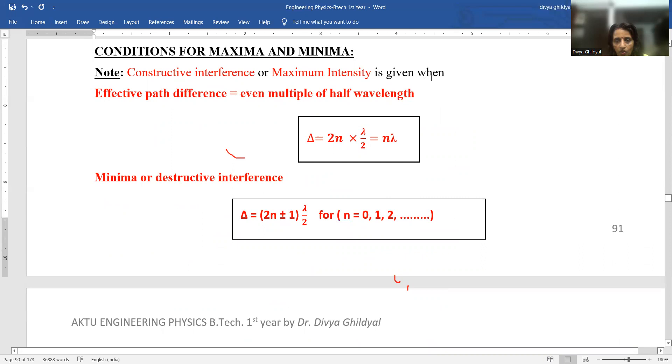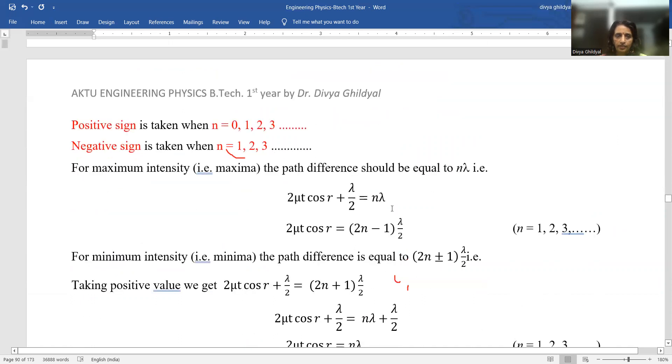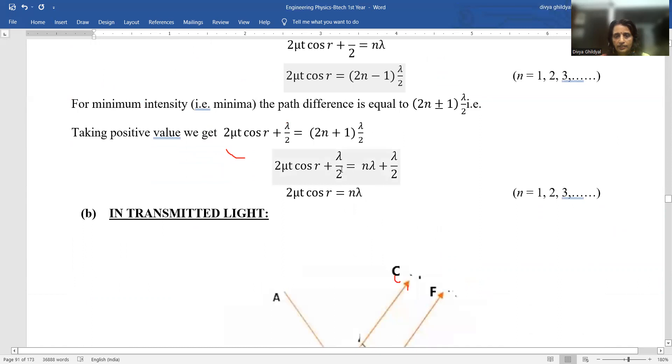Now in order to apply the conditions for maxima and minima, constructive interference or maximum intensity is given by effective path difference is equal to even multiple of half wavelength. And minima or destructive interference is given by 2N plus minus 1 lambda by 2 for N equal to 0, 1, 2, etc. Positive sign is taken when N is 0, 1, 2. Negative is taken when N is 1, 2, 3. Putting these conditions here, we get the formula for maxima and minima.